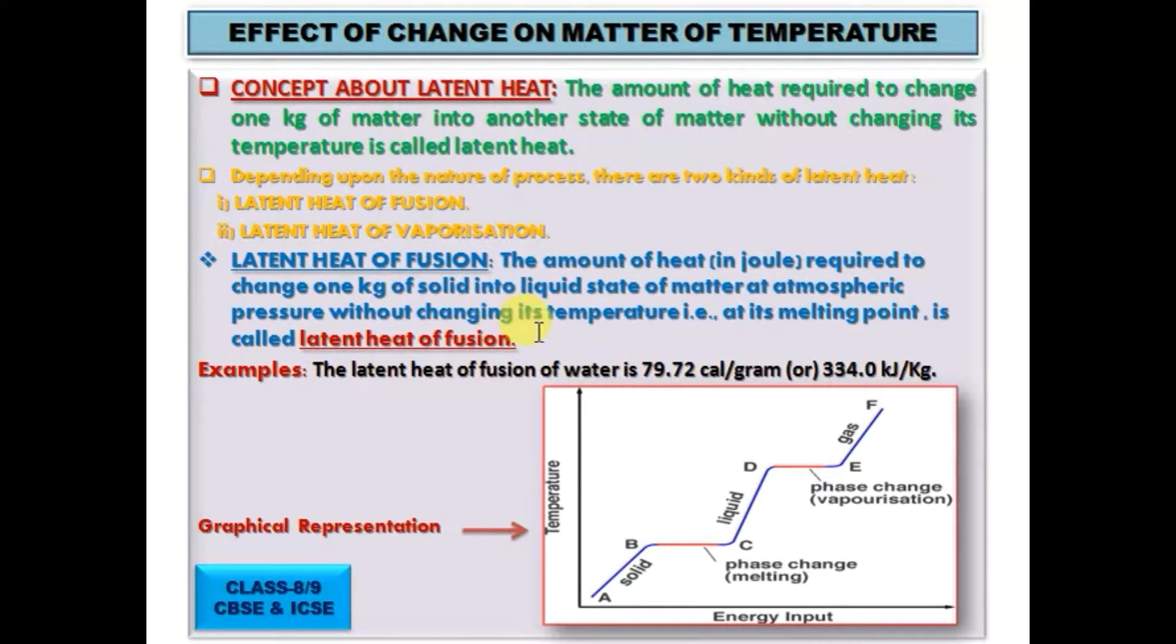So we can say that the latent heat of fusion is the amount of heat in joules required to change 1 kg of solid into liquid state of matter at atmospheric pressure without changing its temperature, that is at its melting point. For example, the latent heat of fusion of water is 79.72 calories per gram or 334 kilojoules per kg.